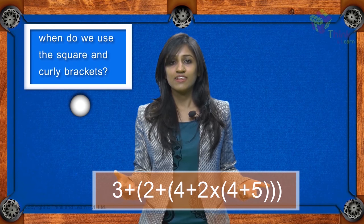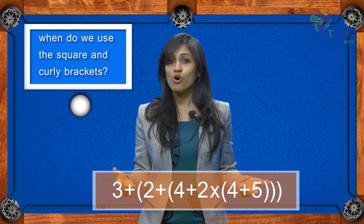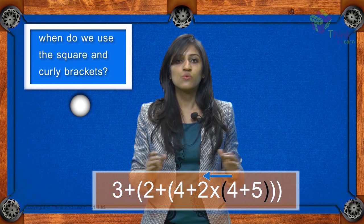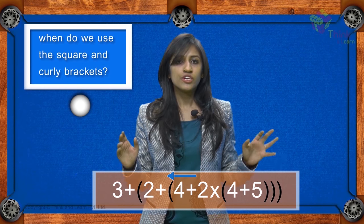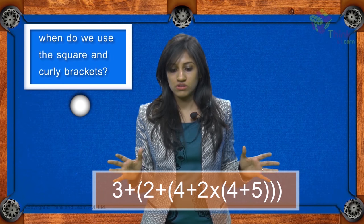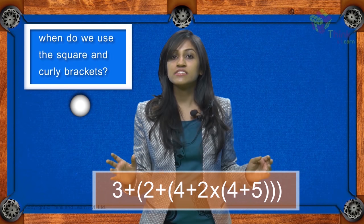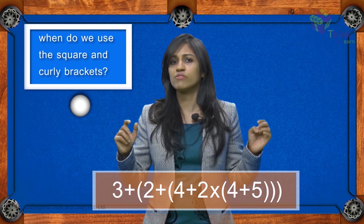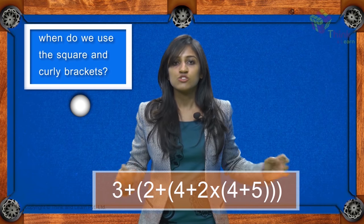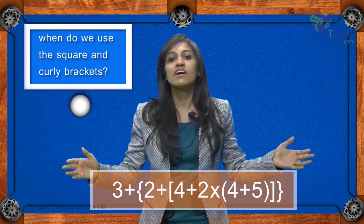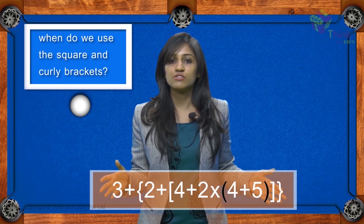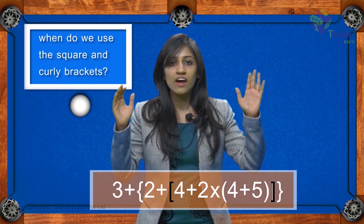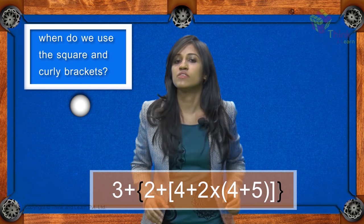When do we use the square or the curly brackets? Well, when this happens, the mode of operation is generally from in to out. But using just the round brackets, this looks complicated. Instead, you can use different types of brackets for every level. In mathematics, it's most common to use round brackets at the first level, square brackets at the second level, and curly brackets for the last level.